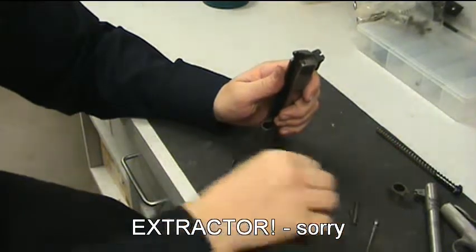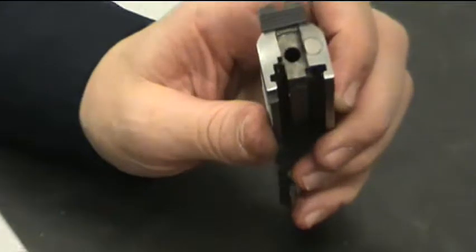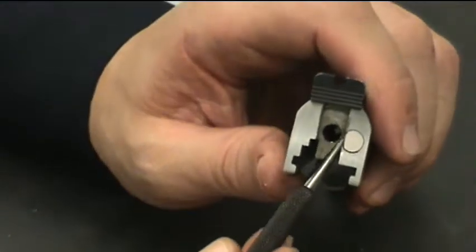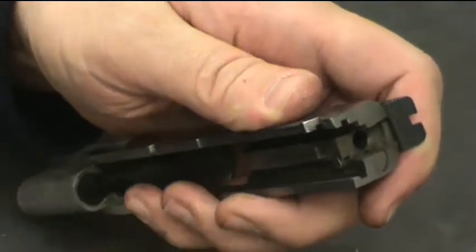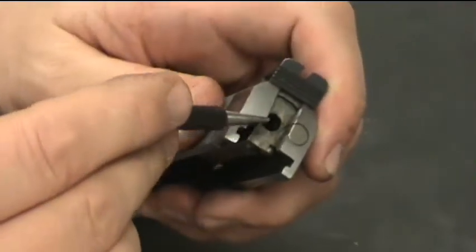Now, your extractor, if you look right here, is your extractor. If you pull that back just a little bit, it will release your firing pin safety and allow that to fall out. If you've got a good spring in there and it's not dirty, it'll actually pop out. Otherwise, you might have to jimmy it out a little bit.